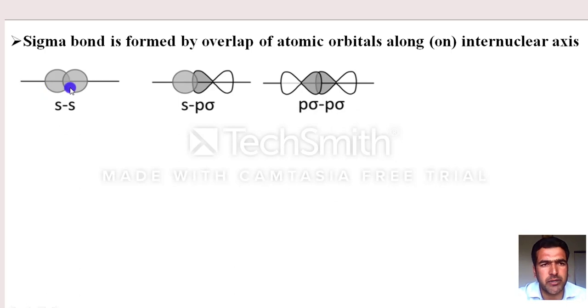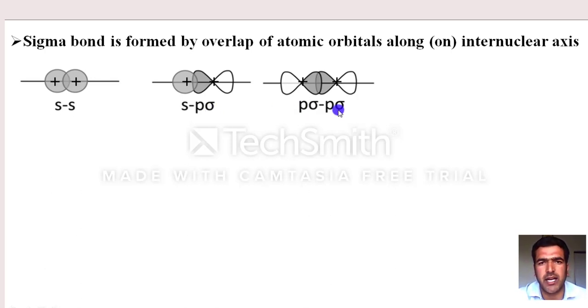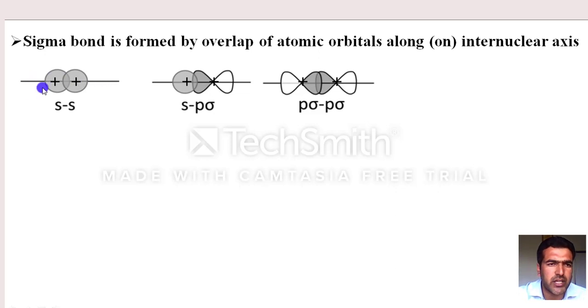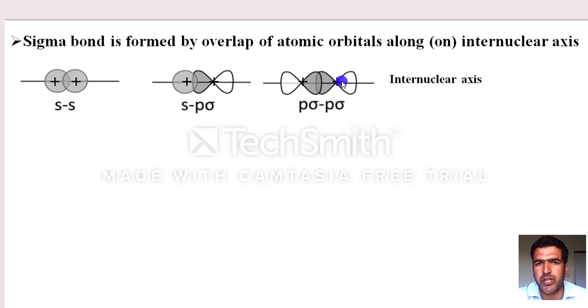We know a sigma bond is formed by overlap of atomic orbitals along the internuclear axis. This can happen when one atom's s orbital overlaps with another atom's s orbital, or s with p, or one atom's p orbital overlaps with another atom's p orbital along the internuclear axis. The internuclear axis is the line joining the nuclei of the two atoms.